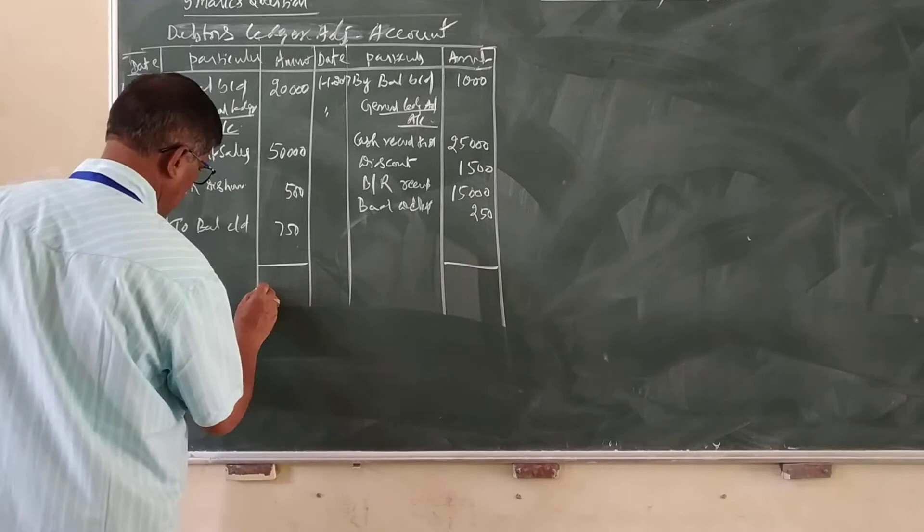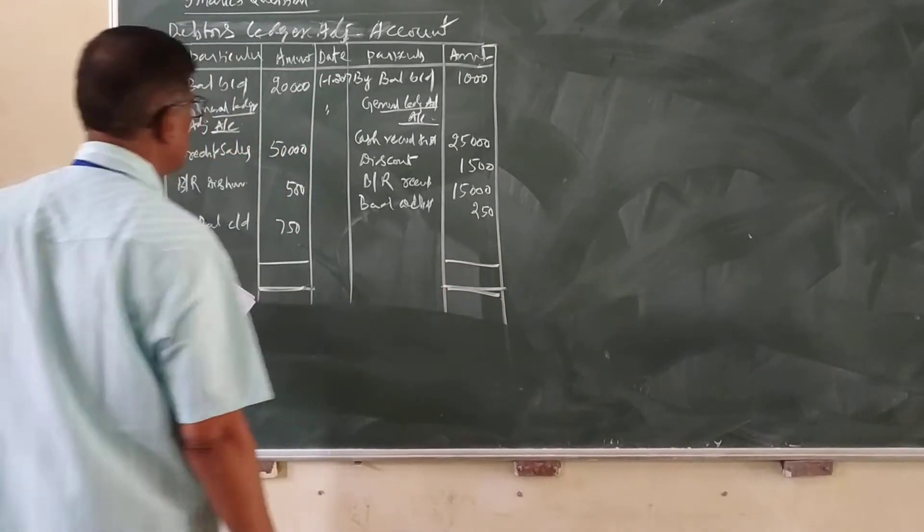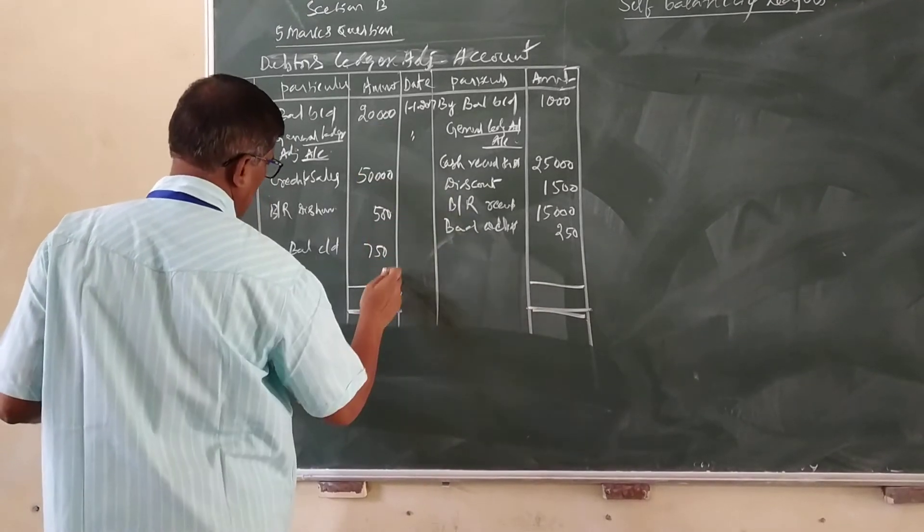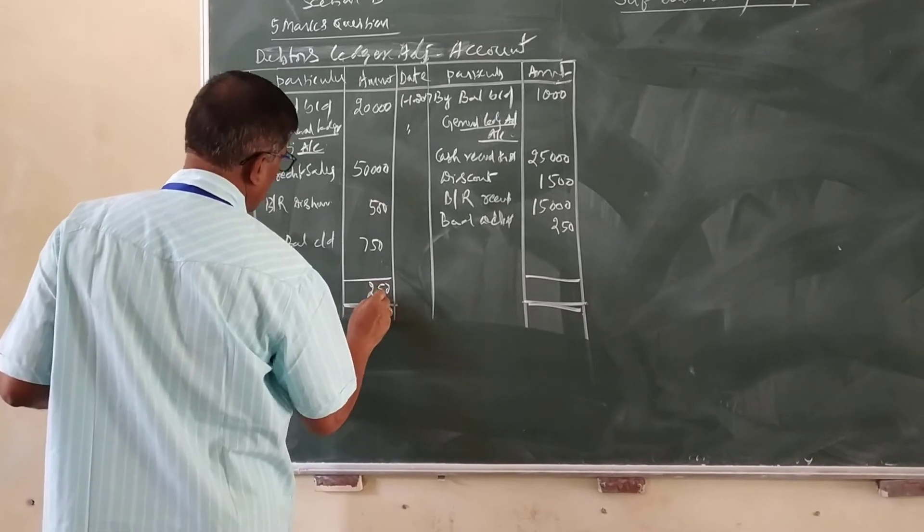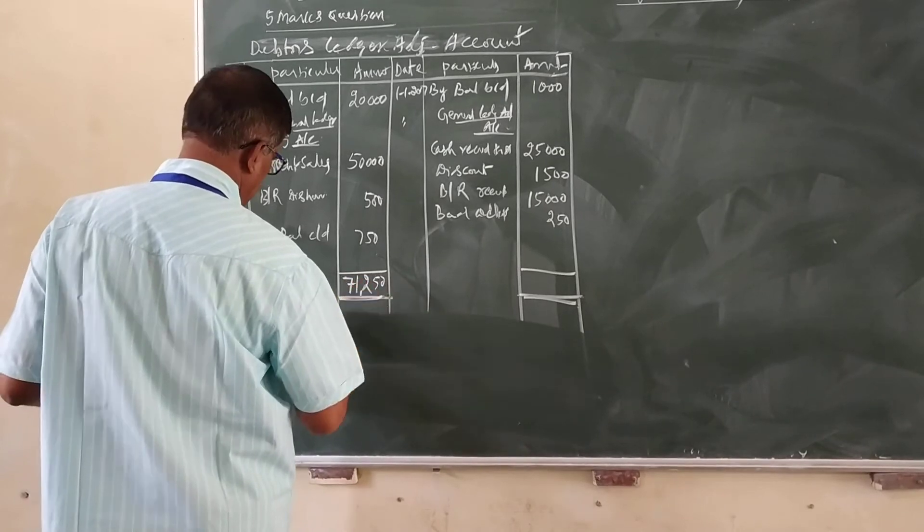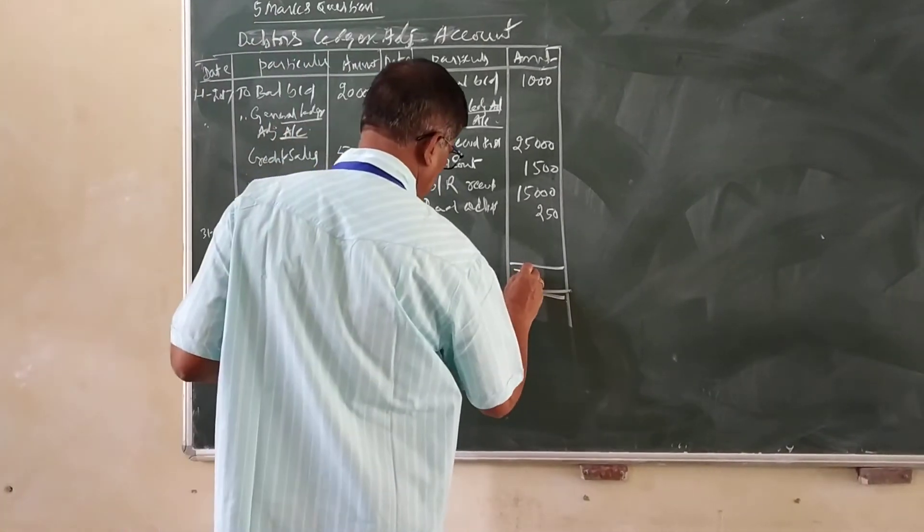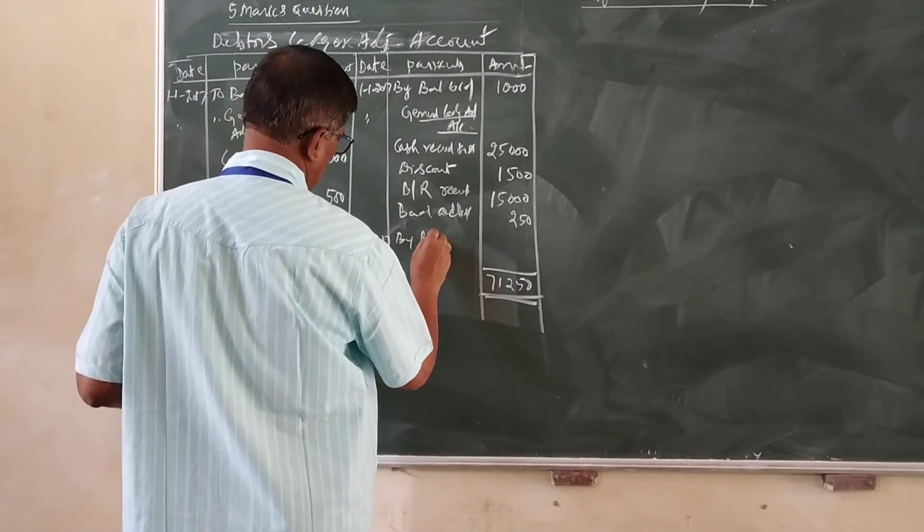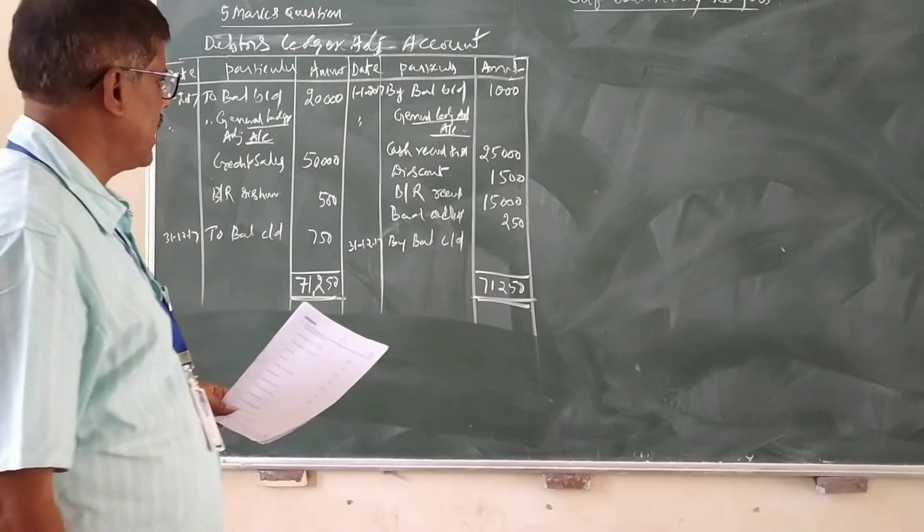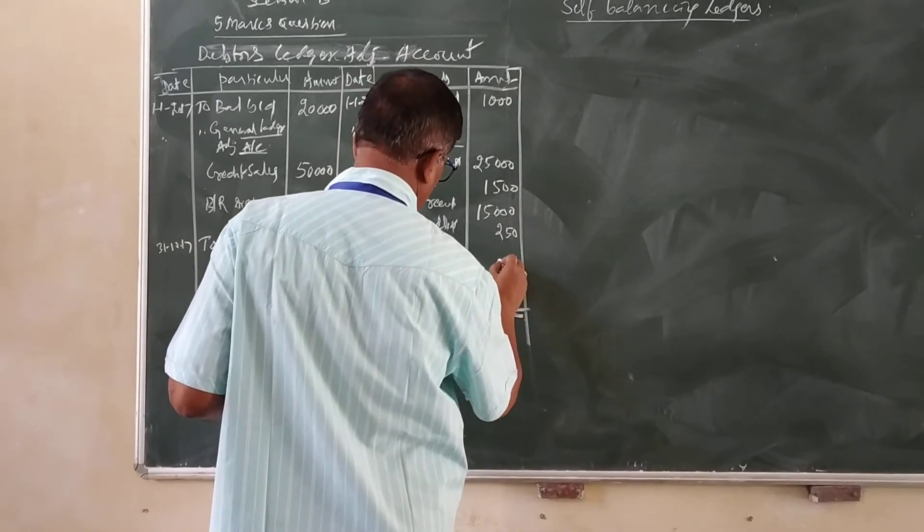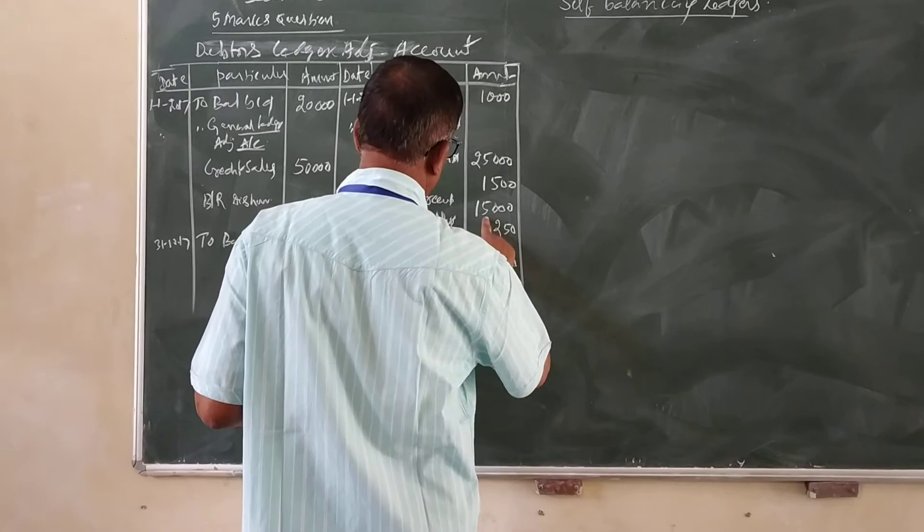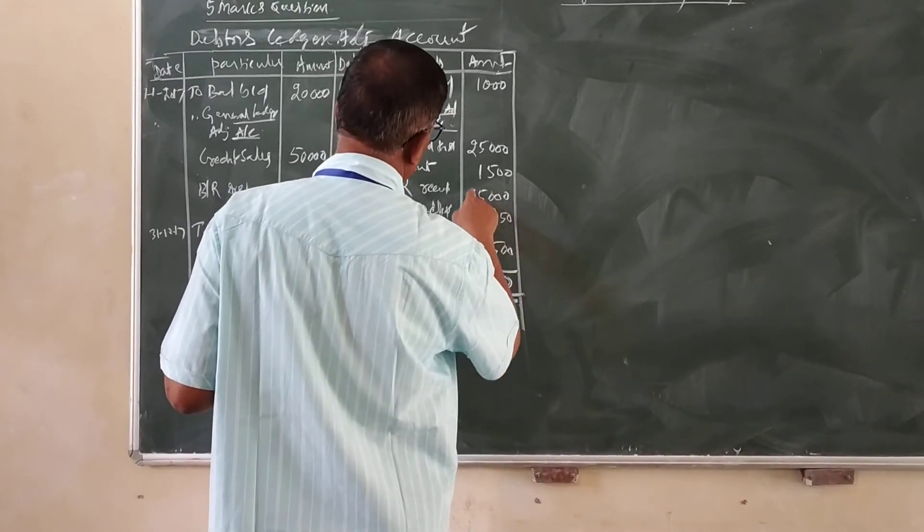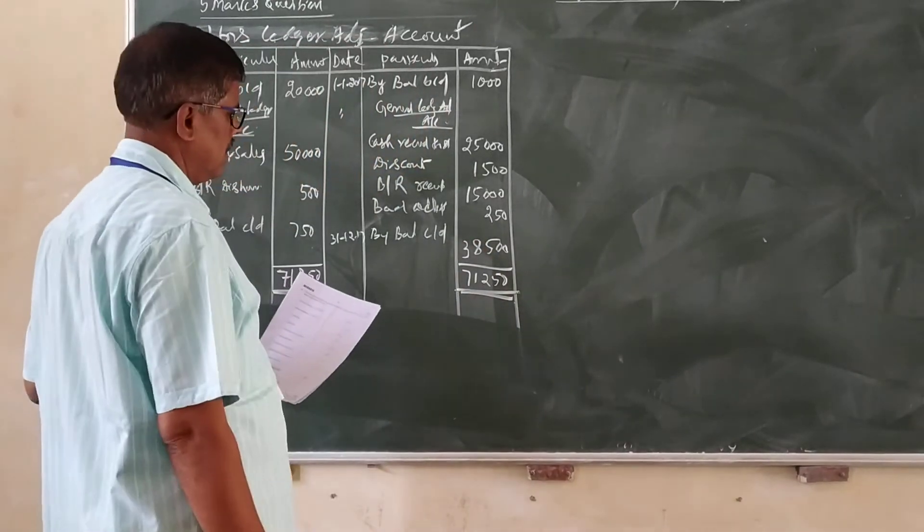Now you can summarize this account. Usually debit side is more than the credit side. First you put on the debit side. Total 71,250. Here also 71,250. 31-12-2017 by balance c/d.